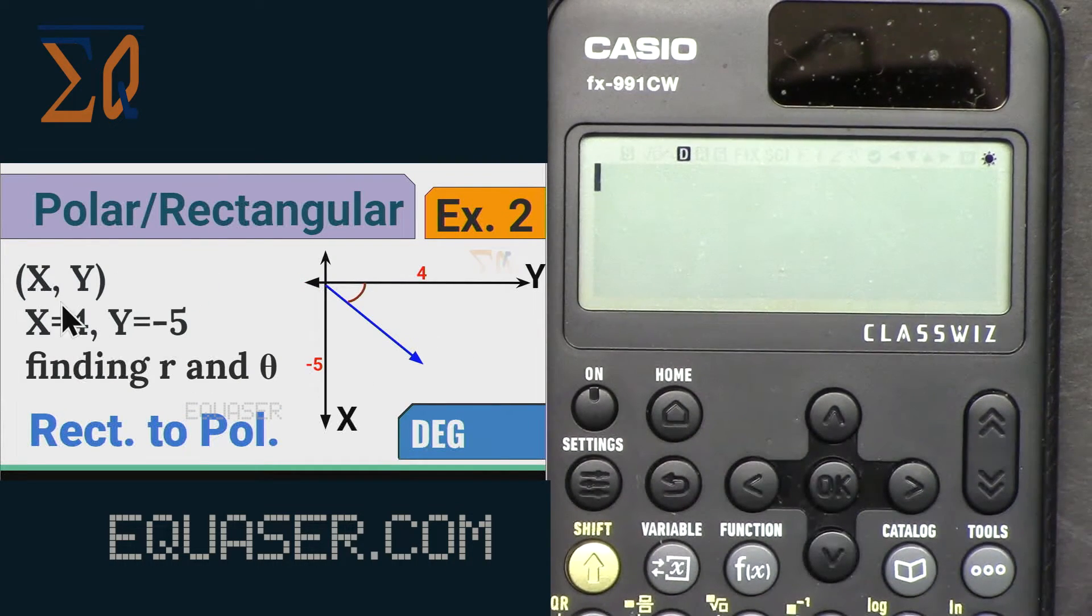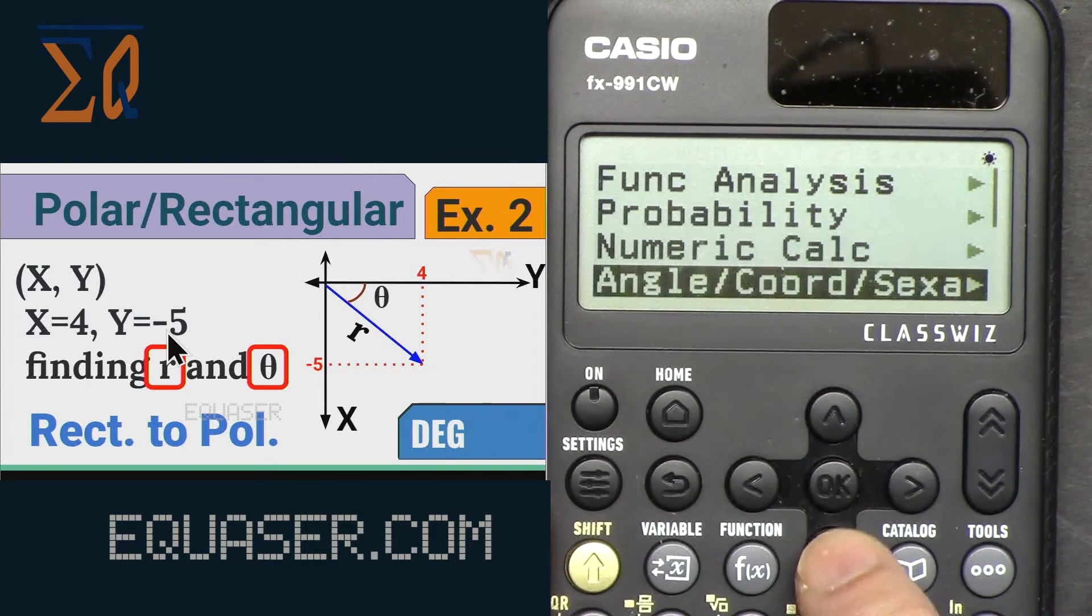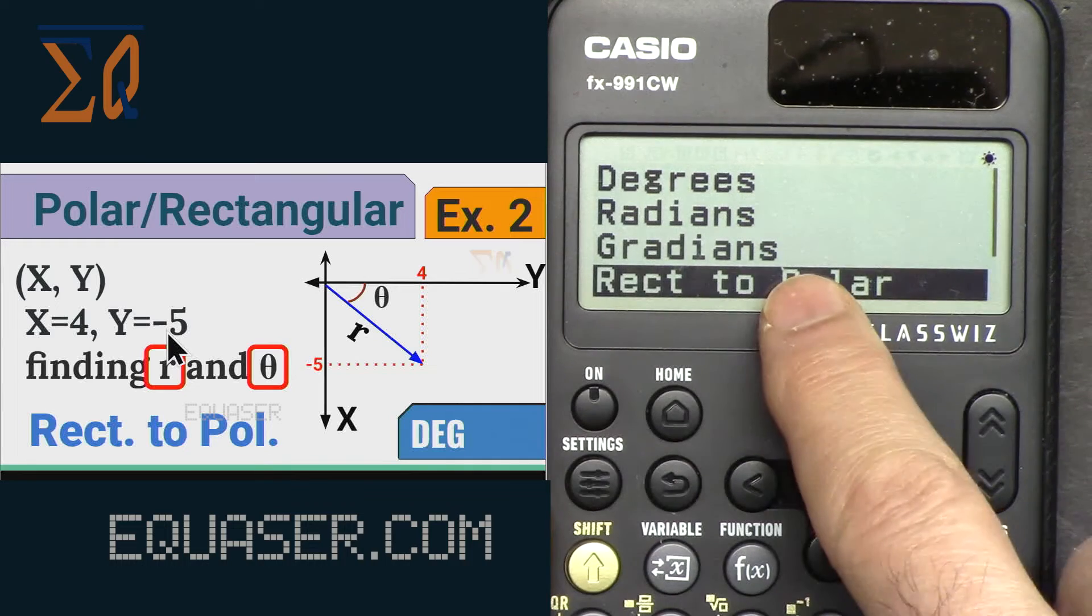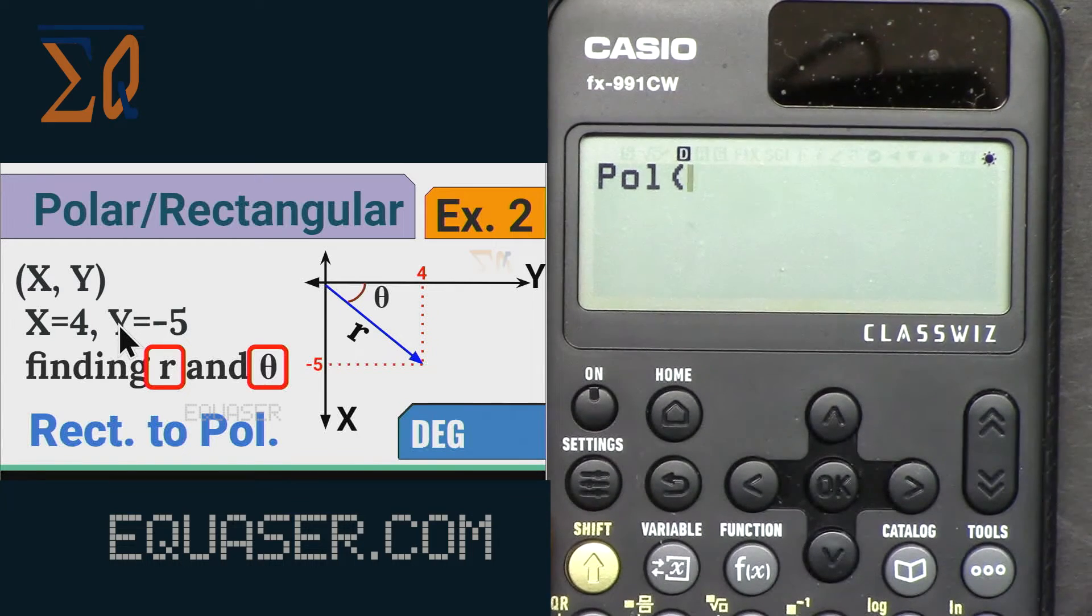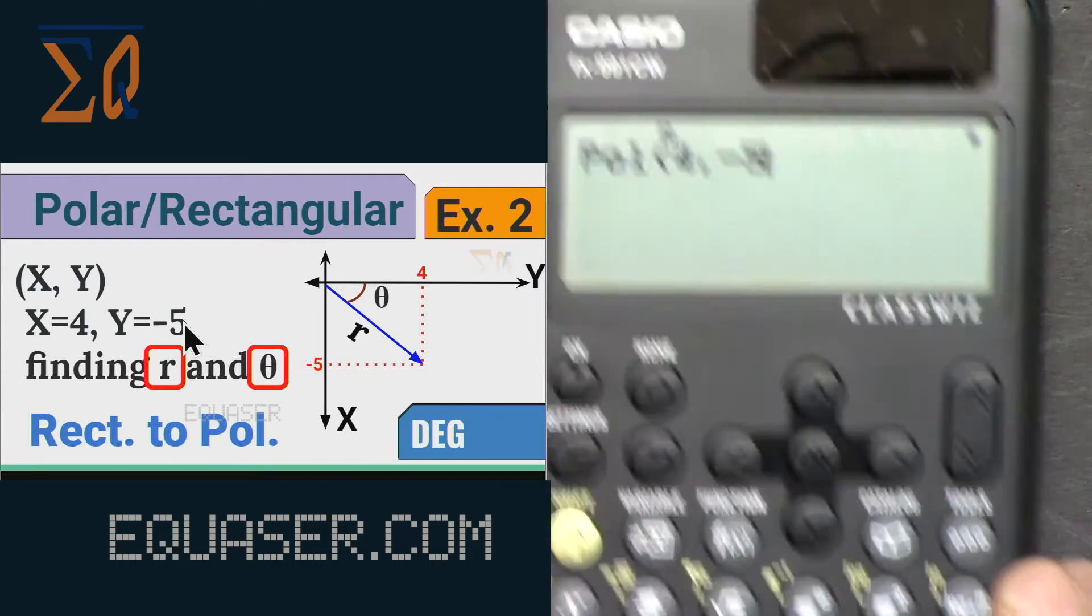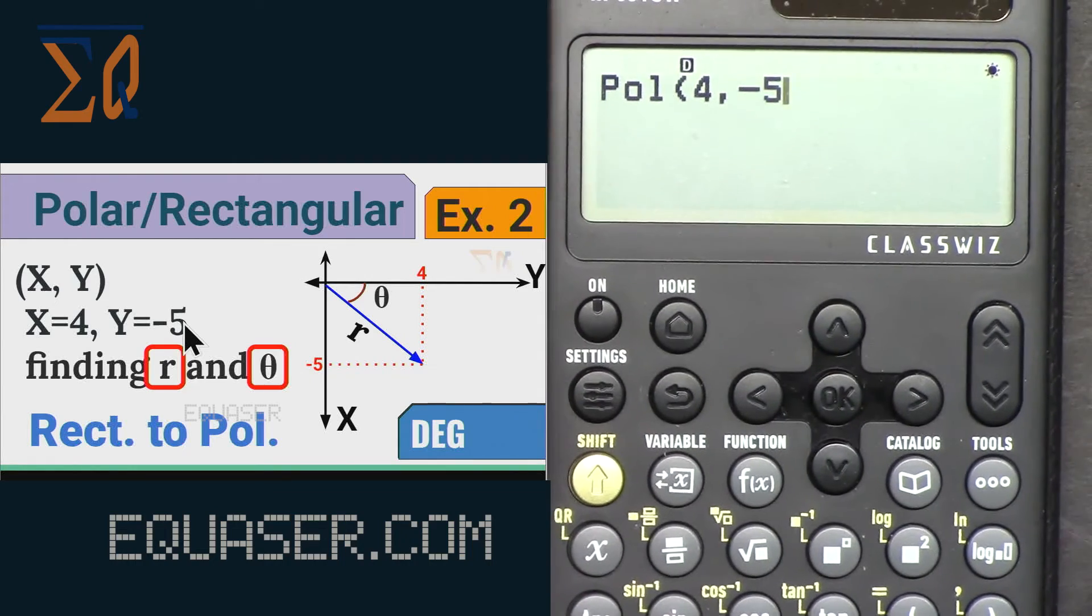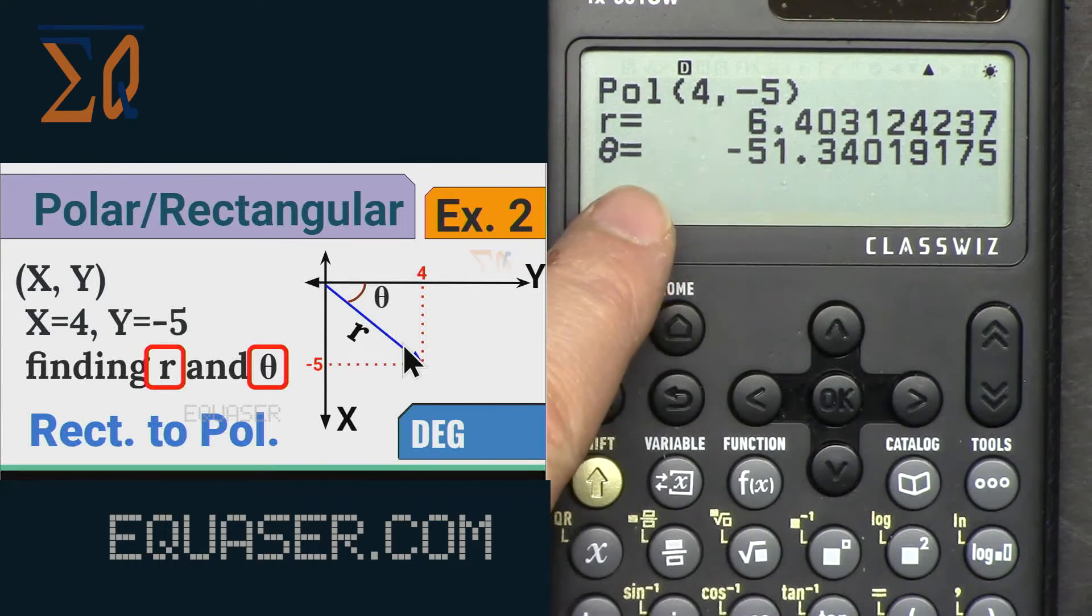In this example we have X = 4 and Y = -5. We want to find θ and r for this point. Press Catalog, Angle and Coordinate. This time because we want to get polar, Rectangular to Polar, enter 4 and then Alpha comma and then minus 5. I just entered this minus, it will work. Close it, Equal. As you can see the magnitude is 6.4 and the angle is -51° because it's below. If you get a positive answer that would be incorrect.